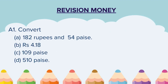Let us look at the answers to these questions — do check your work. Question 1: A) The correct answer is 182 rupees and 54 paise. B) The answer is rupees 4.18. C) The answer is 109 paise. D) The answer is 510 paise.